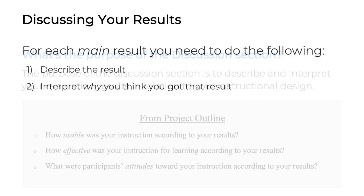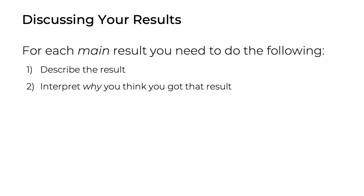For each of these questions, you'll want to think about what worked well and what didn't. Most importantly, you'll want to explain why you as the designer ended up with these results, connecting these explanations to your specific instructional design decisions. For each main result, you should describe the result and interpret why you think you got that result.